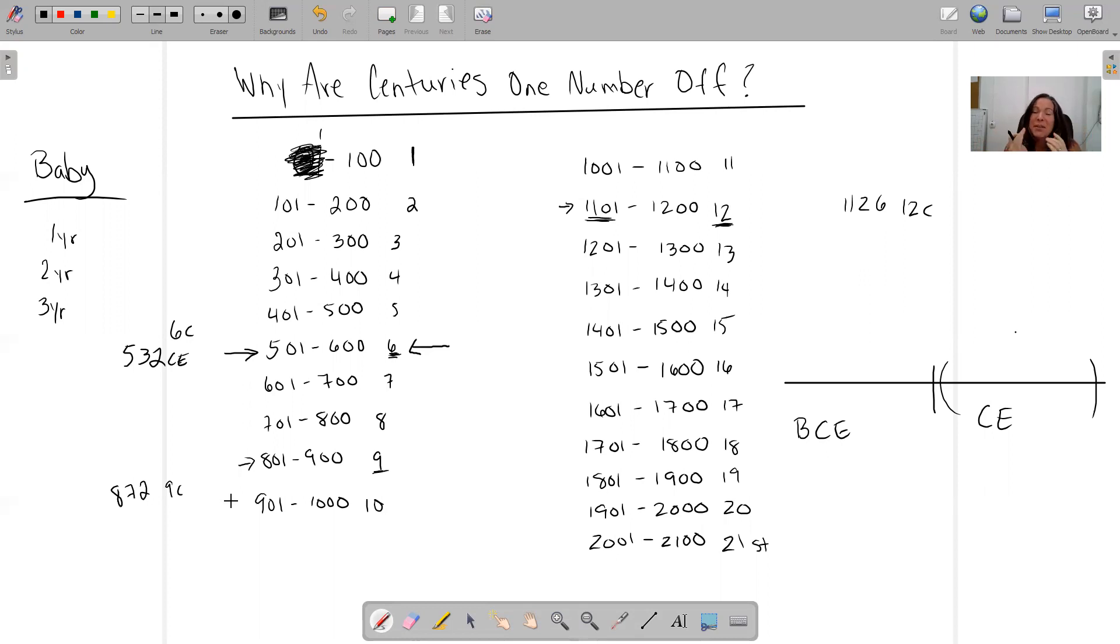But the way I always try to remember it is I go back and think of it as a little baby. Little babies, we don't count that first year. There's always a year, and then we go with one. So there's always an entire century, and then we go with one.